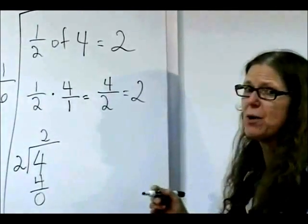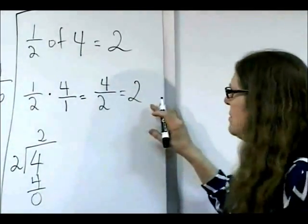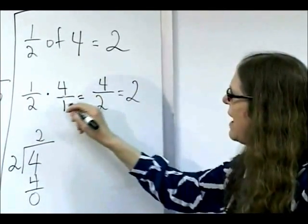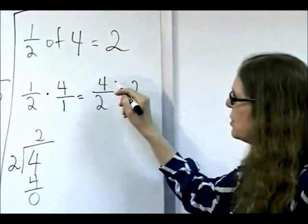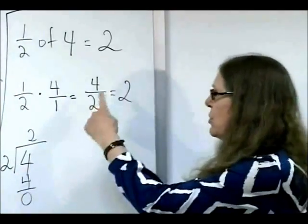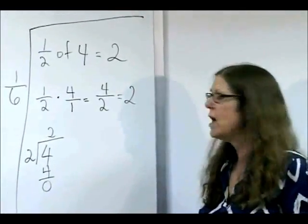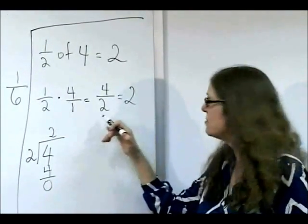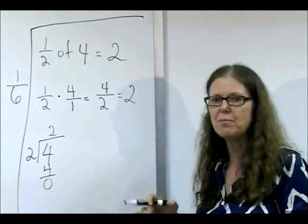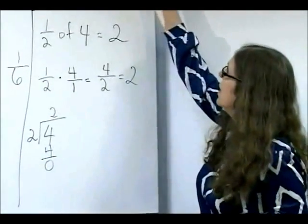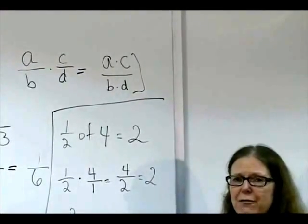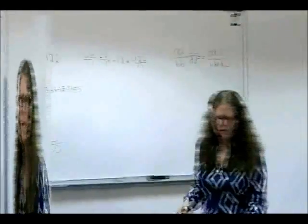And of course, two could be expressed as two over one. But I mean, I don't need to do that. So again, if we took a half times four over one, we got one times four is four. Two times one is two. We multiplied the numerator and we multiplied the denominators. And then I just kind of re-expressed my answer as a whole number. So again, the process described here for multiplying fractions has been proven to work.